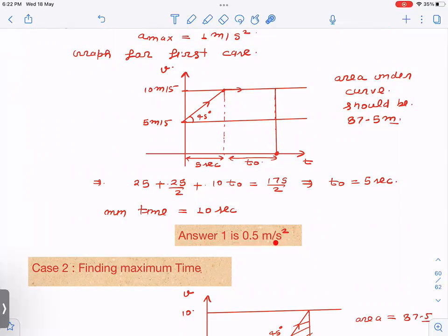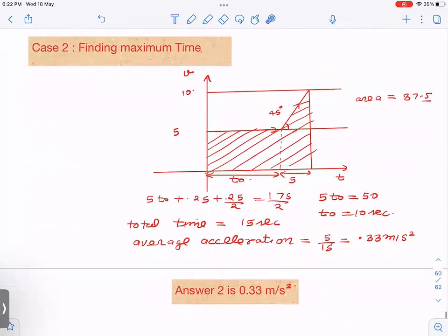To find maximum time, we reverse the logic. If time is to be maximized, then the particle should move most of the time with minimum speed, but the condition is that it has to exit with 10 meters per second. So most of the time it can move with 5, then after that take maximum acceleration and exit with 10. This area should be 87.5 meters.